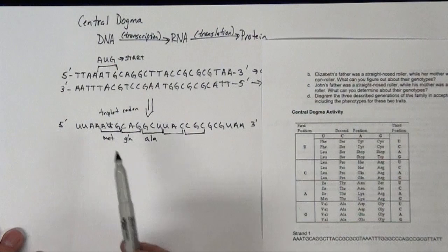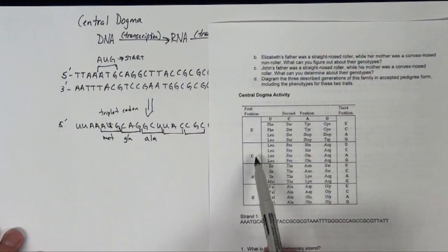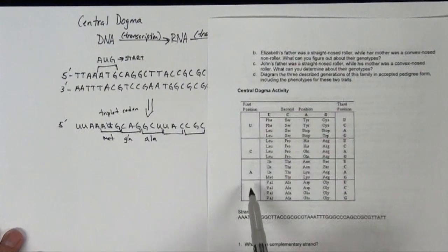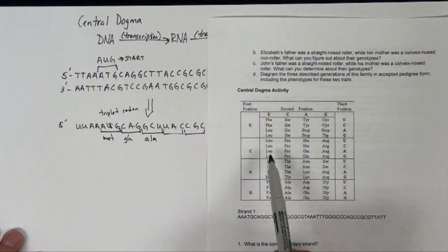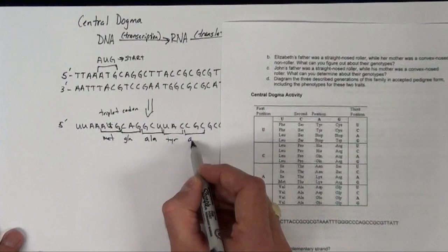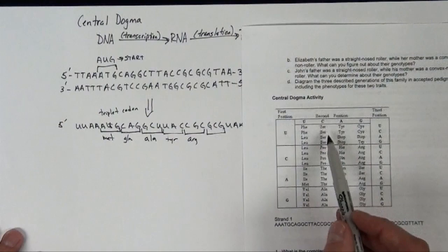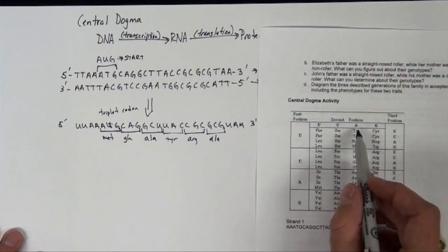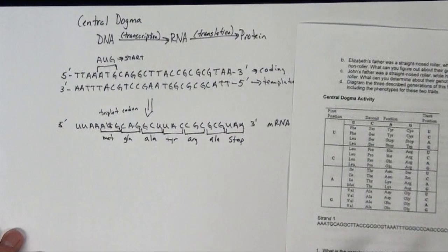I then will read my table over here to determine my other amino acids. So C-A-G gives me glutamic acid. G-C-U gives me alanine. U-A-C gives me tyrosine. C-G-C gives me arginine. G-C-G gives me alanine again. And U-A-A gives me a stop codon. And that's where we'll stop.